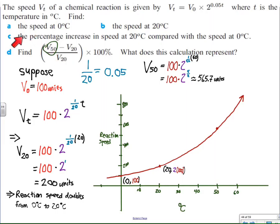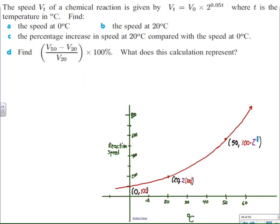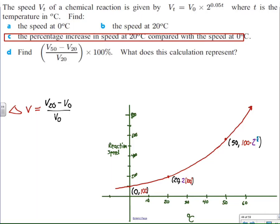Now, what they're really interested in in parts C and D, I'm assuming, is comparing how fast the reaction changes at cold temperatures compared to how fast the reaction changes at warmer temperatures. 50 degrees Celsius is pretty warm. So that's what those questions are about. That's what I'm going to try to answer. So here we have the graph, and in the first case it's asking for the percentage increase in speed at 20 degrees compared to the speed at 0 degrees.